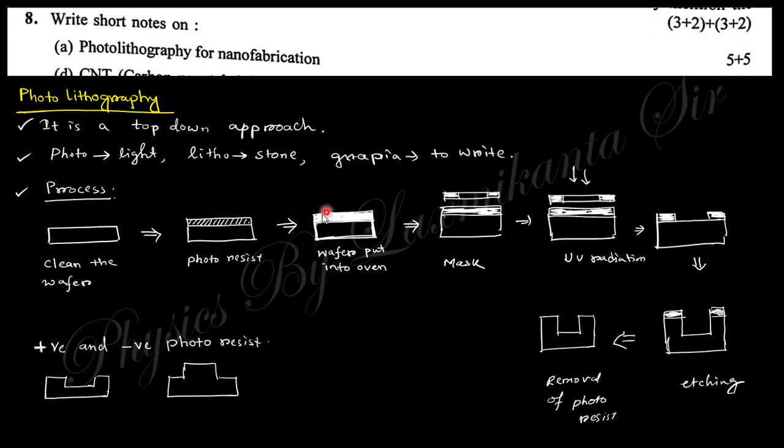Then put it into the oven to make it harder, then use a mask. You irradiate with UV light, then it will be exposed here. By etching process, the material is etched. Finally, remove the photoresist and you obtain this nanostructure. There are two types of photoresist: positive photoresist and negative photoresist. Here the example is positive photoresist, which means this photoresist is exposed by UV light.